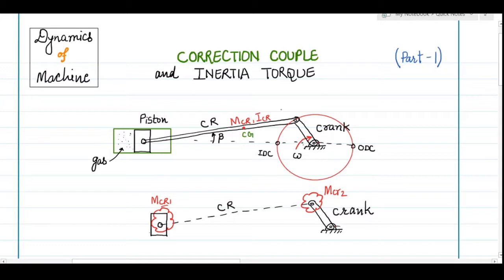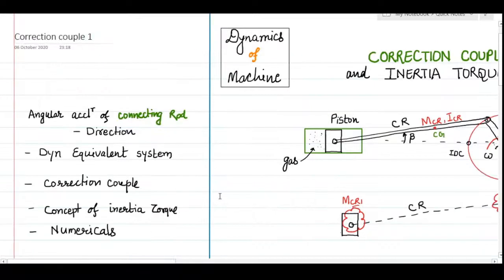The piston is connected with a connecting rod and then with a crank. The most complicated part in this assembly is the connecting rod because its motion is a combination of rotation as well as reciprocation. When we make a simple model of this complicated motion, some correction has to be applied, and using those corrections we finally calculate the inertia torque. In this session we will cover: angular acceleration of the connecting rod, how to decide its direction, the dynamic equivalent system, the correction couple concept, and then a numerical.